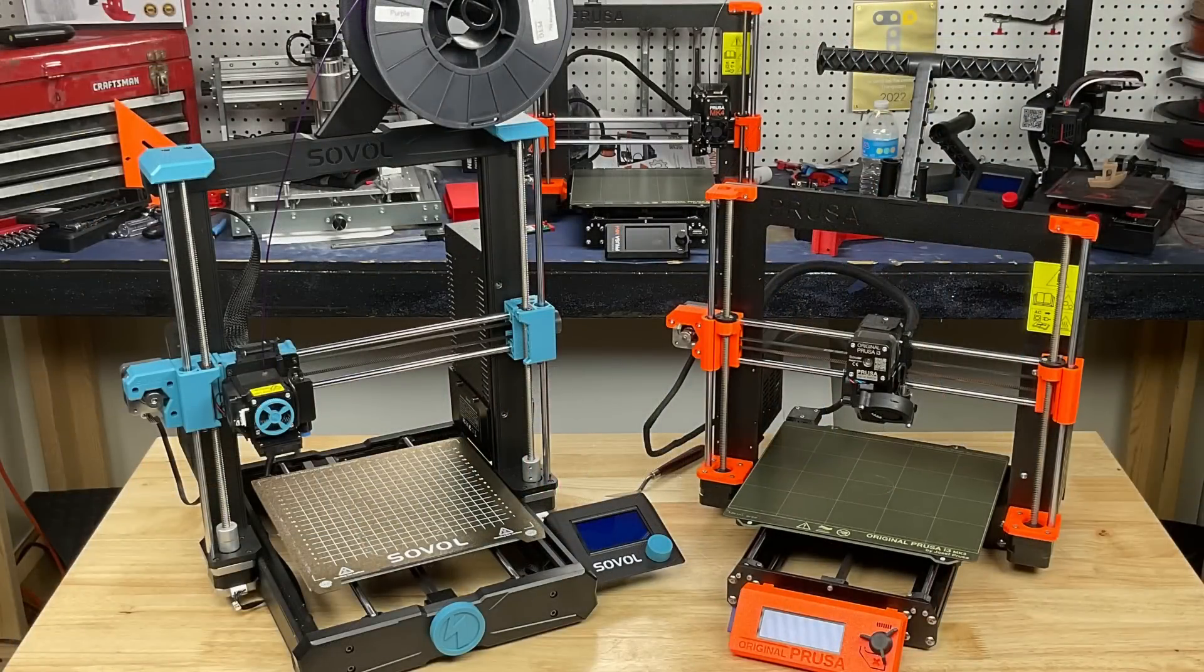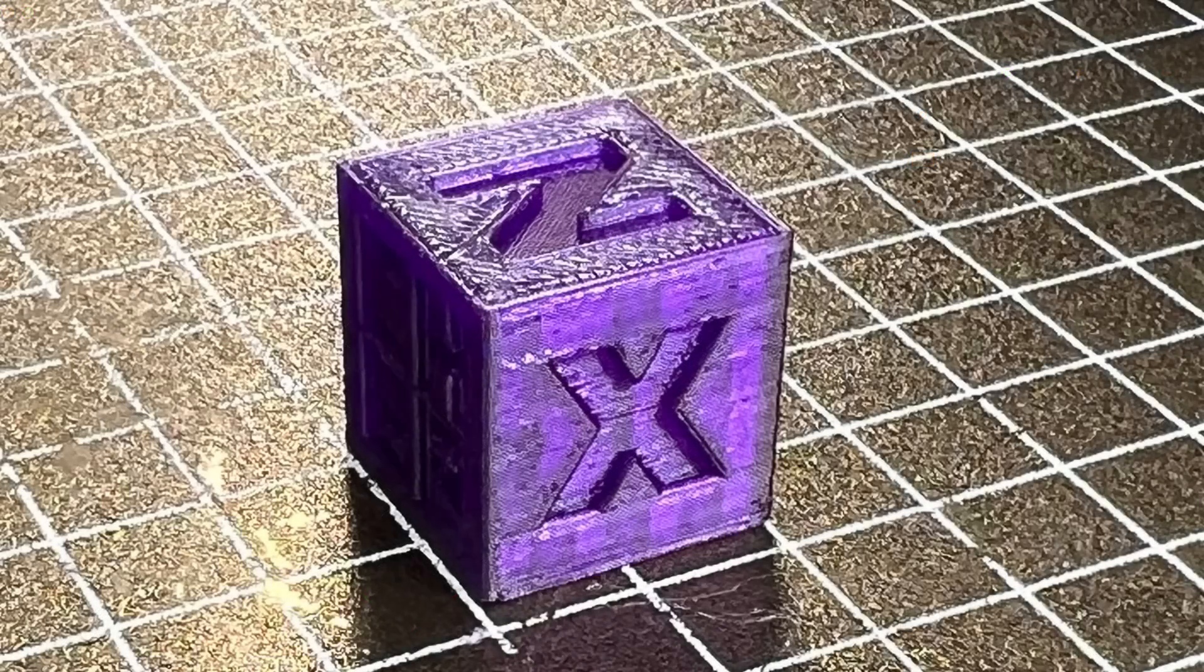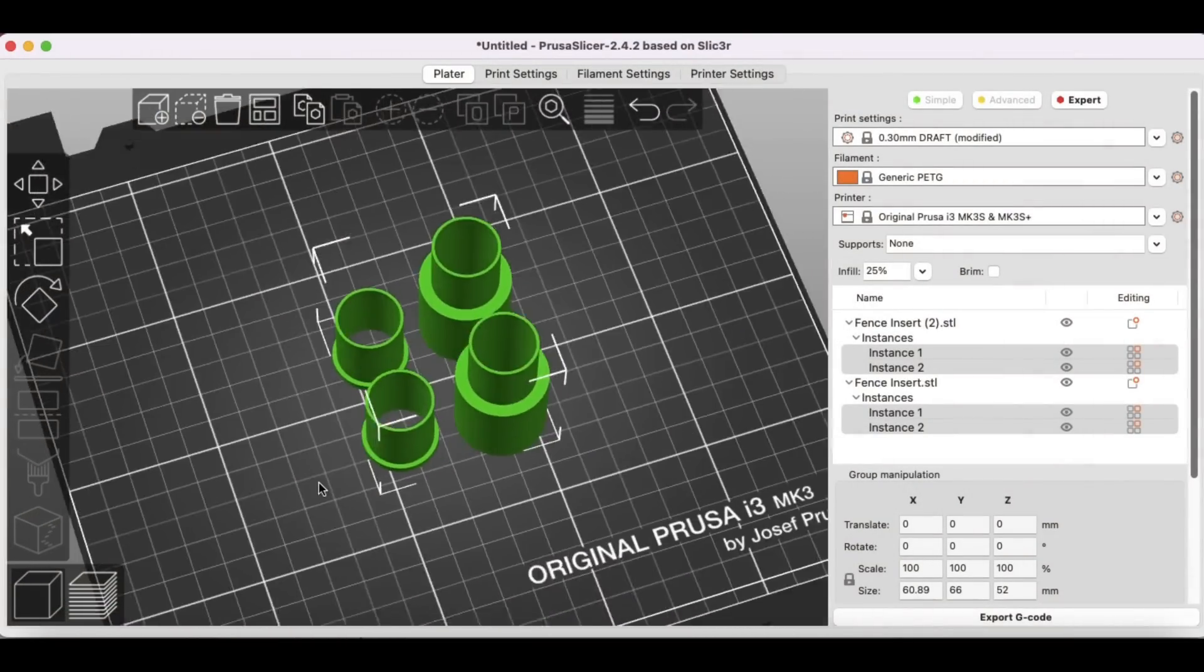Because this thing looks very similar to a Prusa MK3 I'm going to use the Prusa Slicer and the Prusa MK3 profile to slice my prints. The first thing I did is print a Chep Cube and this thing came out really nice so I was ready to just jump right into printing these inserts.